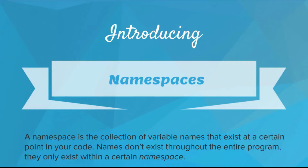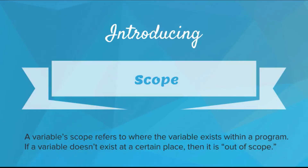Namespaces are closely related with the concept of scope. A variable's scope refers to where exactly the variable exists within a program. If a variable doesn't exist at a certain place in the code, then it is out of scope.